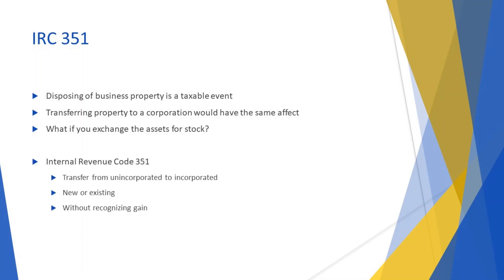Thankfully, Congress came to our rescue and enacted section 351. This allows for the transfer of assets from an unincorporated business to an incorporated business — either new or existing — without recognizing a gain on that transfer. No gain or loss is recognized if: 1) you only receive stock in exchange for your property, and 2) you are in control of the corporation immediately after the exchange.